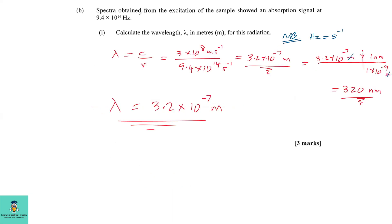Moving to part B: spectra obtained from the excitation of the sample showed an absorption signal at 9.4 times 10 to the 14 hertz, which is the same as 9.4 times 10 to the 14 per second. Part one requires that we calculate the wavelength in meters for this radiation. We're going to use the formula: wavelength equals the speed of light in meters per second over the frequency in per second. So we have 3 times 10 to the 8 meters per second divided by 9.4 times 10 to the 14 per second. Per second cancels per second leaving meters, so our answer for the wavelength is 3.2 times 10 to the minus 7 meters.